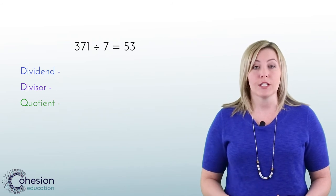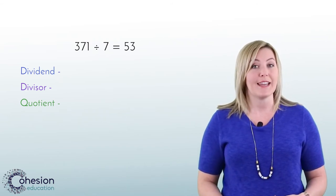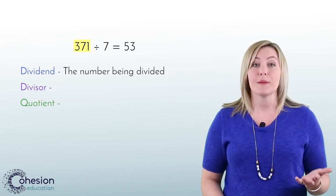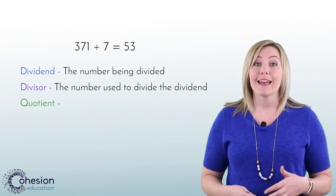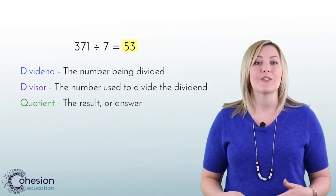Dividend, divisor, and quotient are terms that will be used when dividing. The dividend is the number being divided. The divisor is the number we divide the dividend by. And the quotient is the result or the answer.